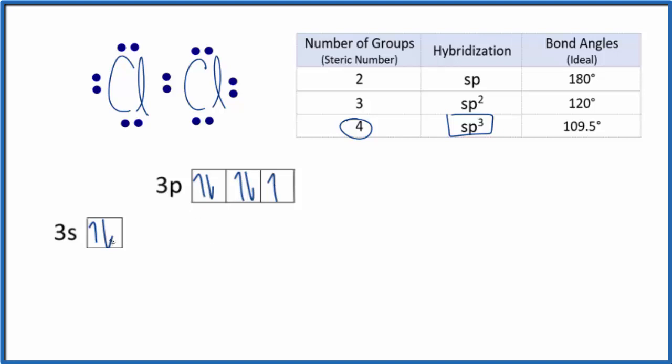So we're going to mix the s and these 3p orbitals together. When we mix them together, we hybridize them. This is what we end up with. We have four equal sp3 orbitals. These would be 3sp3. And we're going to put these electrons in these orbitals. So we have 2, 4, 6, 7. We spread them out, and then we double them up. And we've used all of these electrons here. We've hybridized it.